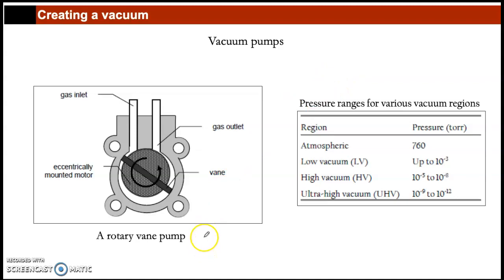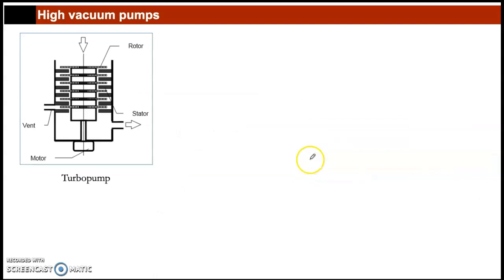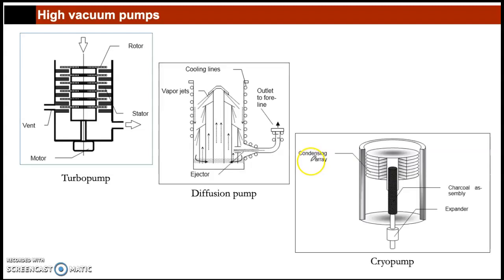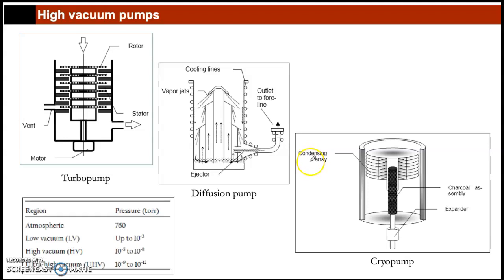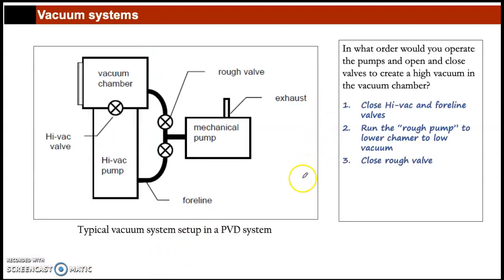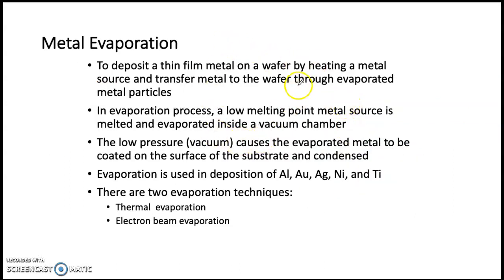To create a vacuum, we need pumps. One type is the rotary vane pump, which can reach pressures down to 10⁻³ Torr depending on the application. For higher vacuum, there are turbo pumps, diffusion pumps, and cryo pumps — these can achieve high vacuum and ultra-high vacuum levels.